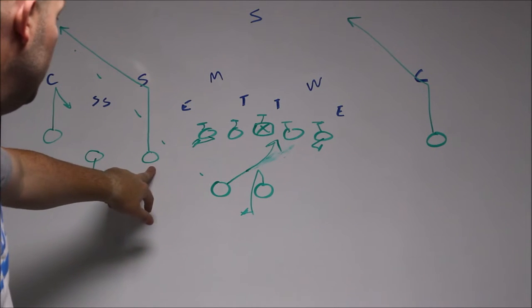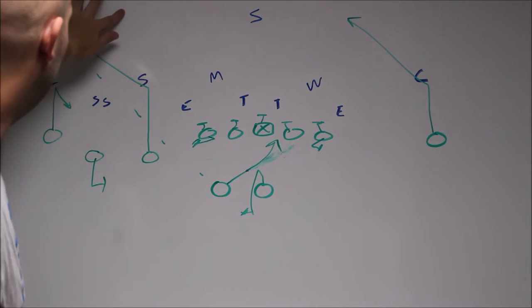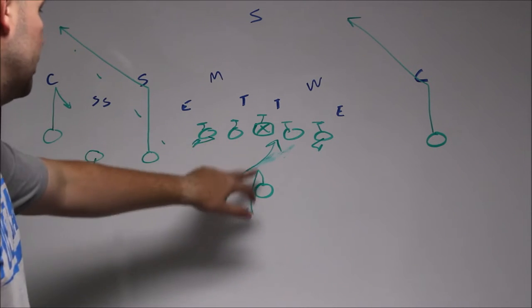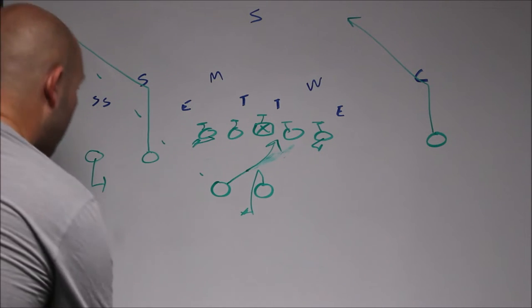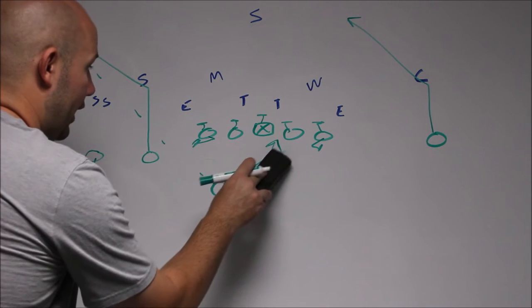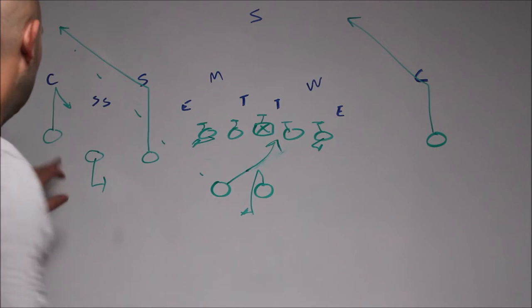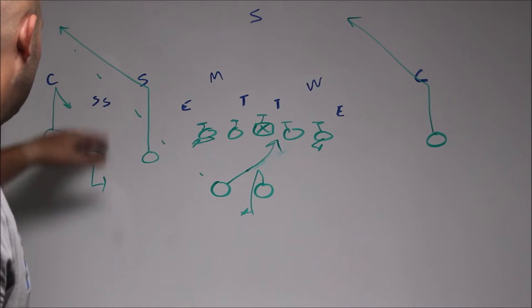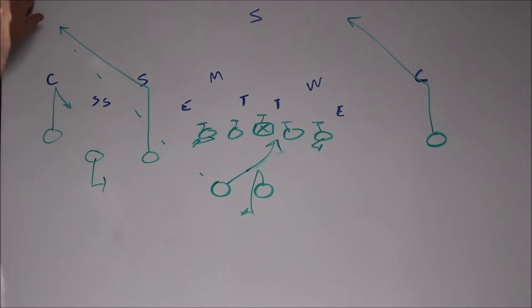Most of the time the corner route will be open. If they're playing off coverage and you got an athlete here, you could throw the now screen. You could have the QB just catch the snap and throw the hitch. The hitch is an option too, especially if they're playing tight man or off coverage.